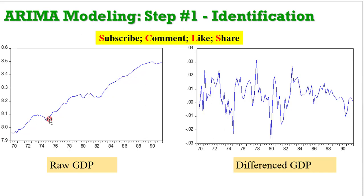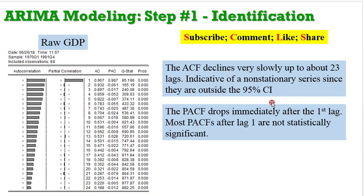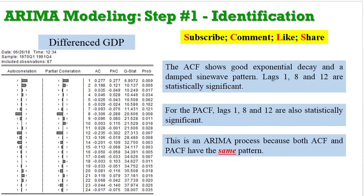This is the GDP data — raw form — and when the first difference is taken this is how the plot looks. The correlogram of the level series shows a gradual decline in the ACF, very slowly up to about 23 lags, indicative of a non-stationary series since the values are outside the 95% confidence interval — also called standard error bounds. The PACF drops immediately after the first lag.